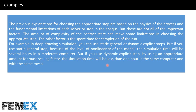The previous explanations for choosing the appropriate step are based on the physics of the process and fundamental limitations of each solver or step in Abaqus, but these are not all the important factors. The complexity of the contact state can also create limitations. Another factor is the time spent for completion of the run. For example, in deep drawing simulation you can use static general or dynamic explicit steps. Using static general can take several hours on a moderate computer, but using dynamic explicit with an appropriate mass scaling factor, simulation time can be less than one hour with the same mesh.